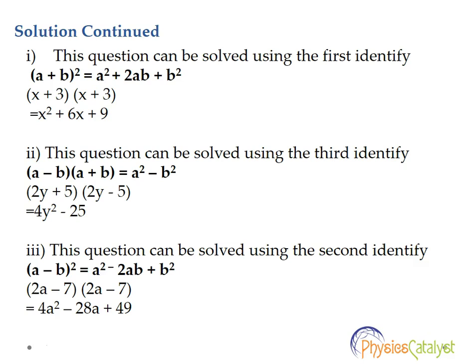Now the second part is (2y + 5)(2y - 5). We've seen the third identity: (a - b)(a + b) = a² - b². So using that same technique, the answer would be 4y² - 25.